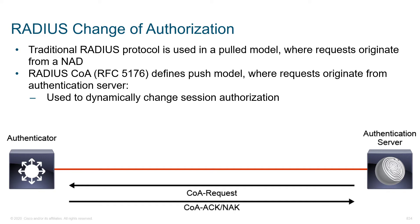This is a way to dynamically update. That may not sound like a big deal, but before COA came out, we'd have to find a clever way to bounce the user off the network and force them to re-authenticate so we could do a new policy check. The change of authorization allows us to use a push model. Notice that traditional RADIUS was used in a pull model, where all requests came from the network access device — the authenticator — and all we could do was reply. COA defines a push model where requests originate from the authentication server, ICE in our case, and are used to dynamically change the session authorization without having to drop the user's session.